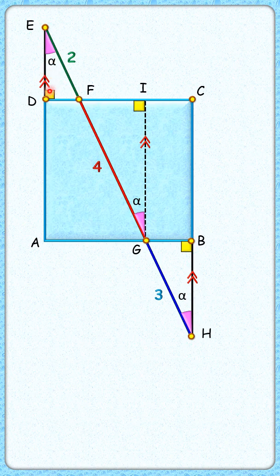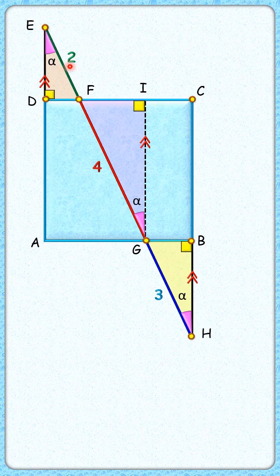By angle-angle similarity, we can say that these three triangles are similar to each other. As the triangles are similar, the ratio of corresponding sides will be equal, so for the three triangles the ratio of sides will be 2 is to 4 is to 3.